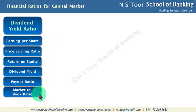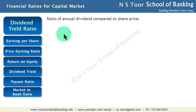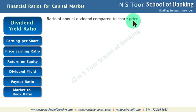In this lesson our focus is on Dividend Yield Ratio. Why is Dividend Yield Ratio calculated? What does it indicate? This ratio indicates Annual Dividend compared to the share price.